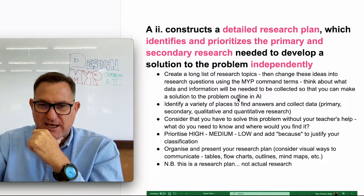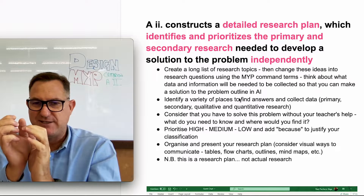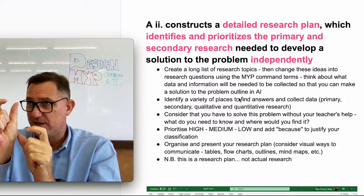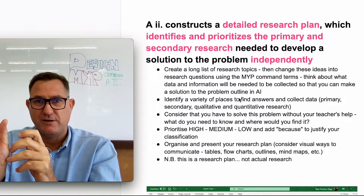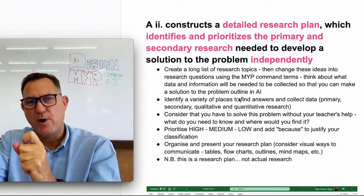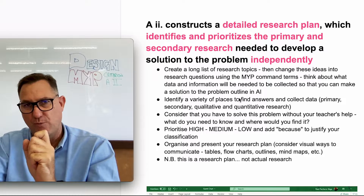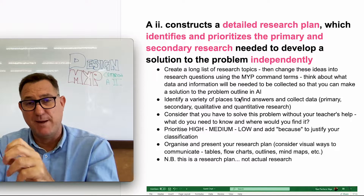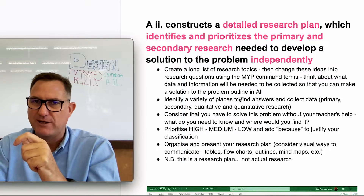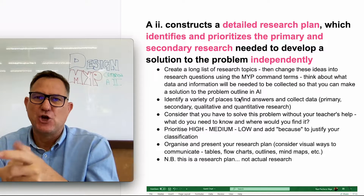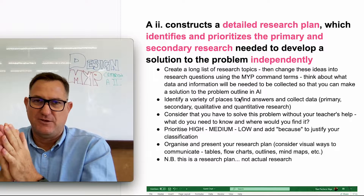Once you have your research questions, identify whether each one will involve primary or secondary research, and then take it one step further — actually think about where you're going to find this information. List specific YouTube videos, books from the school library, or if you're doing primary research, name the expert you're going to interview, their title, why you're interviewing them, and what information you expect to get from them.